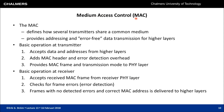The medium access control layer is part of the data link layer in the OSI model — the layer closest to the physical layer. It defines how several transmitters share a common medium (the medium access problem), provides addressing, and delivers error-free data transmission to higher layers. At the transmitter, it accepts data and addresses from higher layers, adds a MAC header and error detection bits to form a MAC frame, and provides the frame and transmission mode to the physical layer.